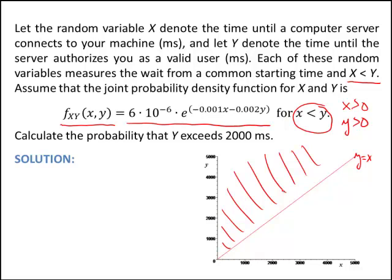Now we're finding a probability about Y, the probability that Y exceeds 2,000 milliseconds. So if we're going to compute something having to do with the random variable Y, it would be really nice to have the probability density function for Y. So that's what we're going to do. You could actually find the probability of Y a couple different ways, but what I'd like to do is go ahead and get the joint probability density function for Y first, and then find the probability that Y exceeds 2,000 after we already have that function.